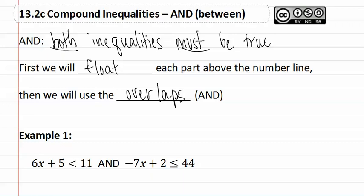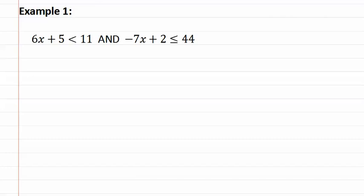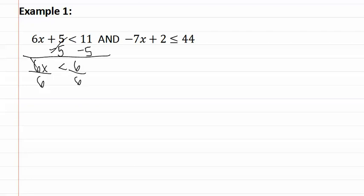Let's look at example one. Let's solve each inequality. We start by subtracting five, and we get 6x is less than six. Divide both sides by six, and we get x is less than one.